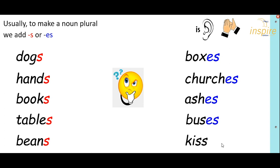Kiss: kisses. So usually, if the word ends in X, CH, SH, or SS sound, you add ES, and all of the singular nouns add an extra syllable to make the plural.